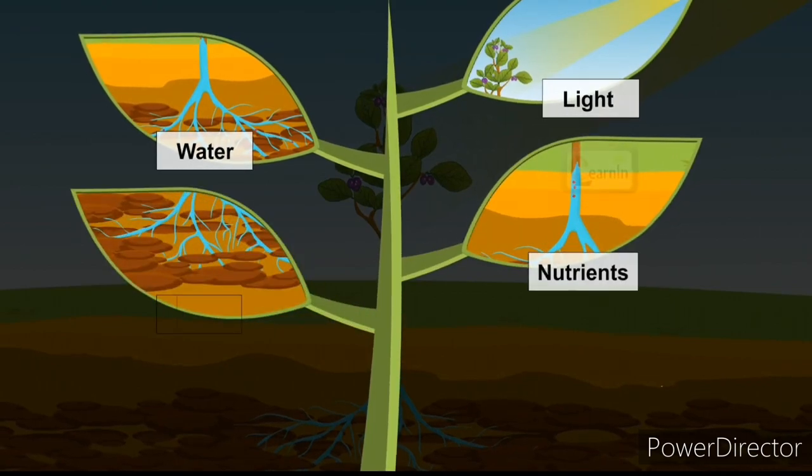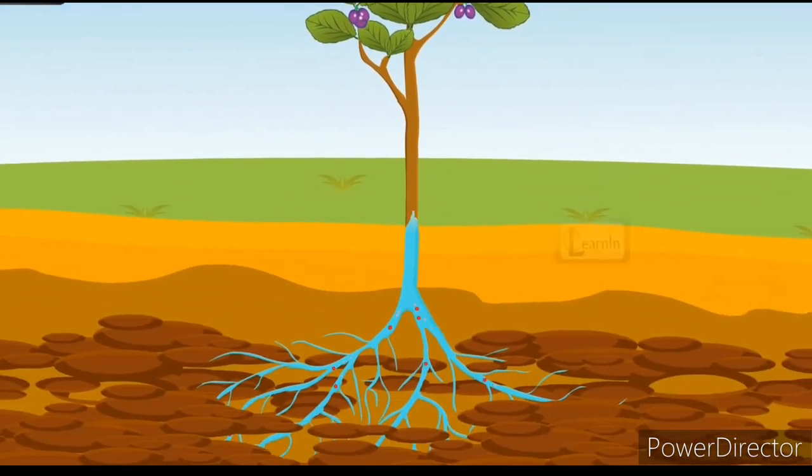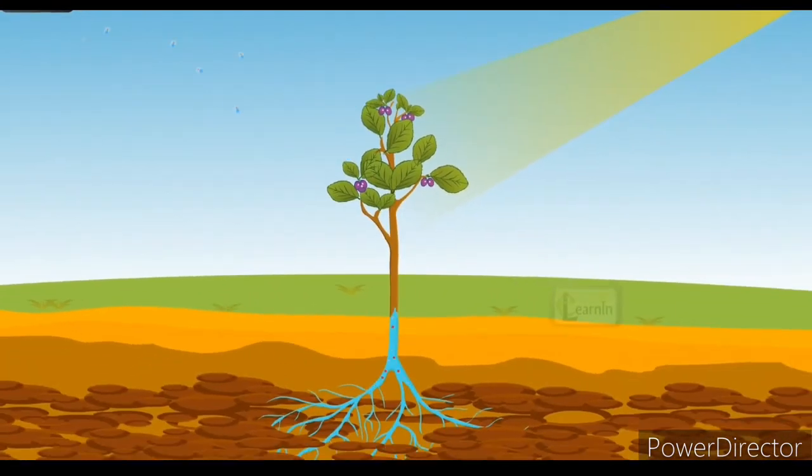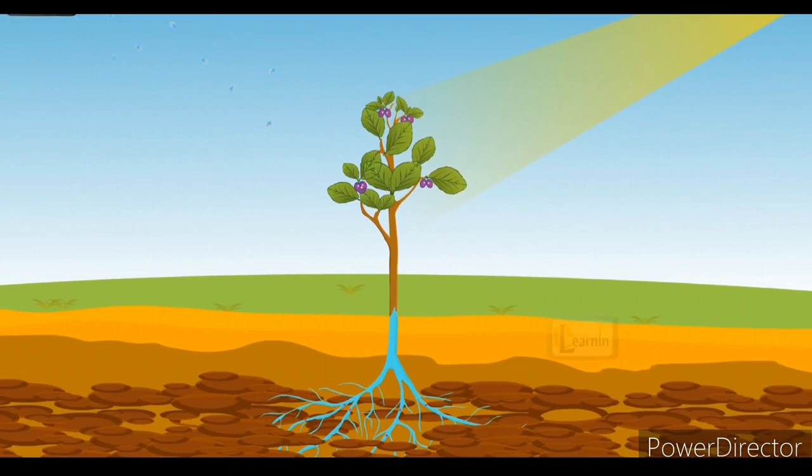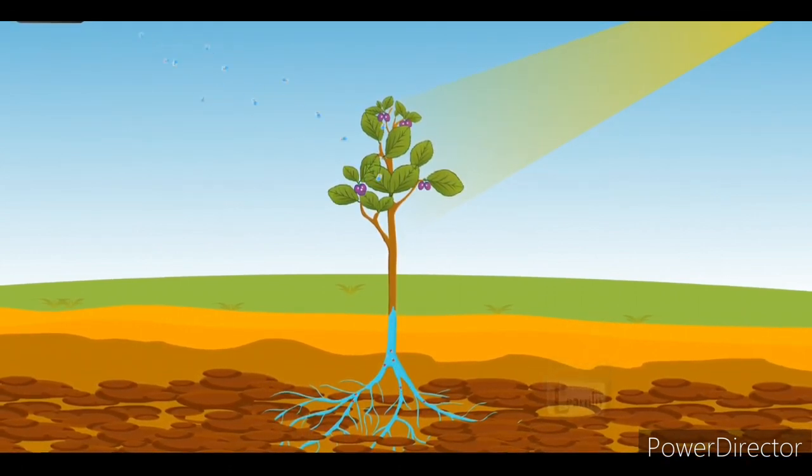During photosynthesis, plants take in carbon dioxide and water from the air and soil. Within the plant cell, the water is oxidized, meaning it loses electrons, while the carbon dioxide is reduced, meaning it gains electrons.